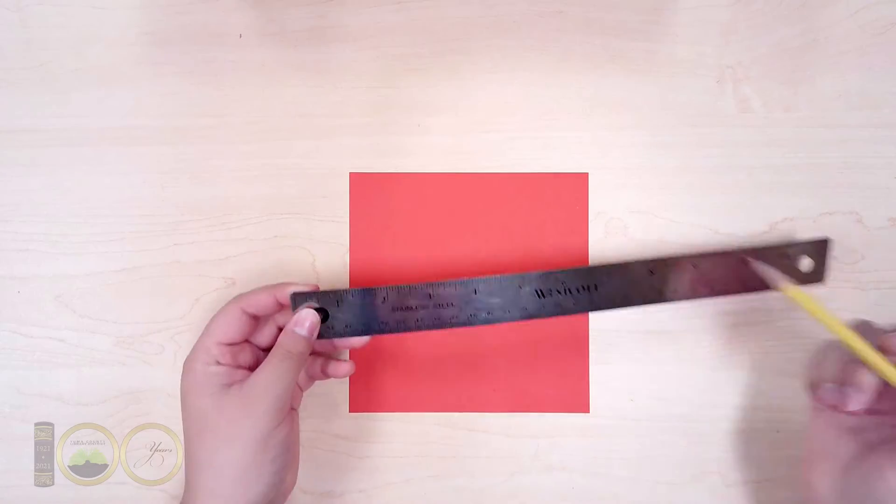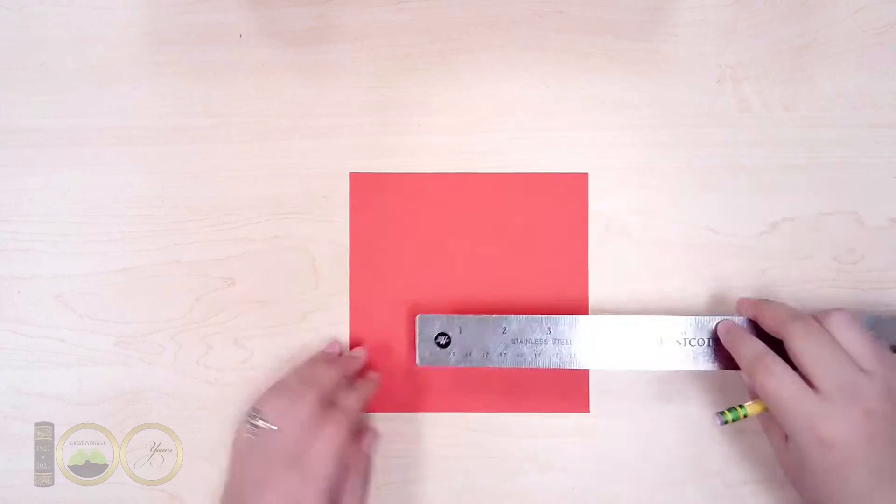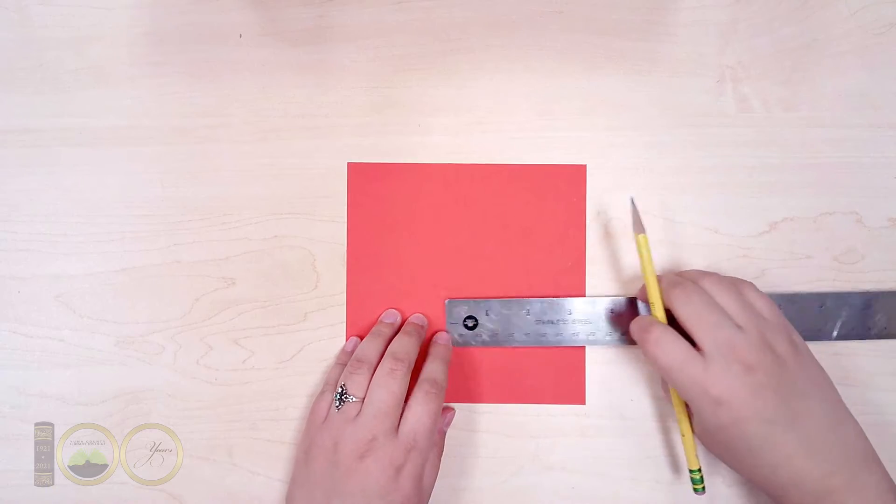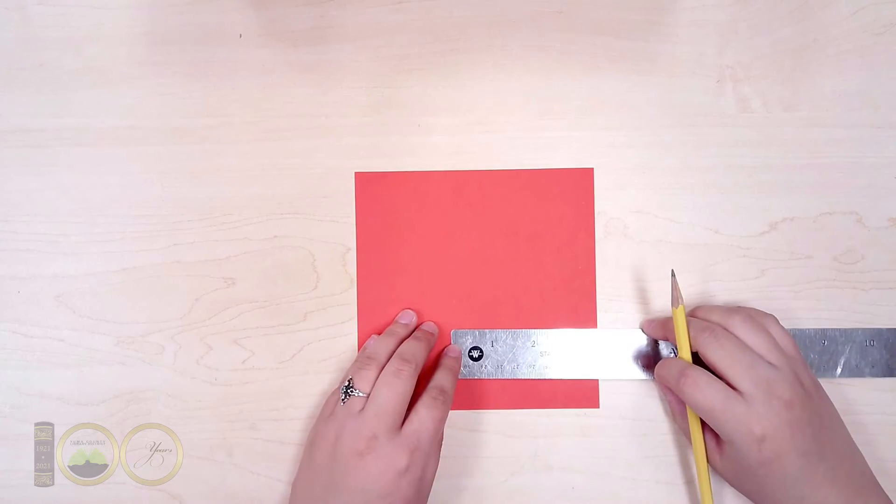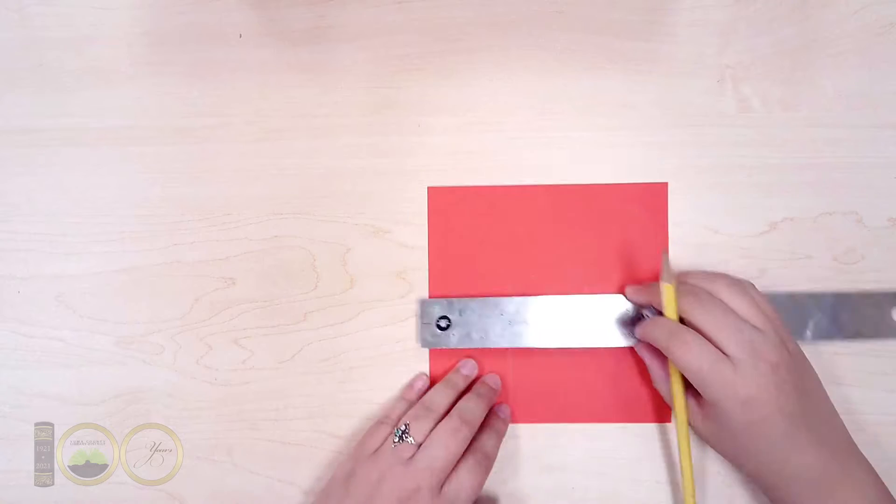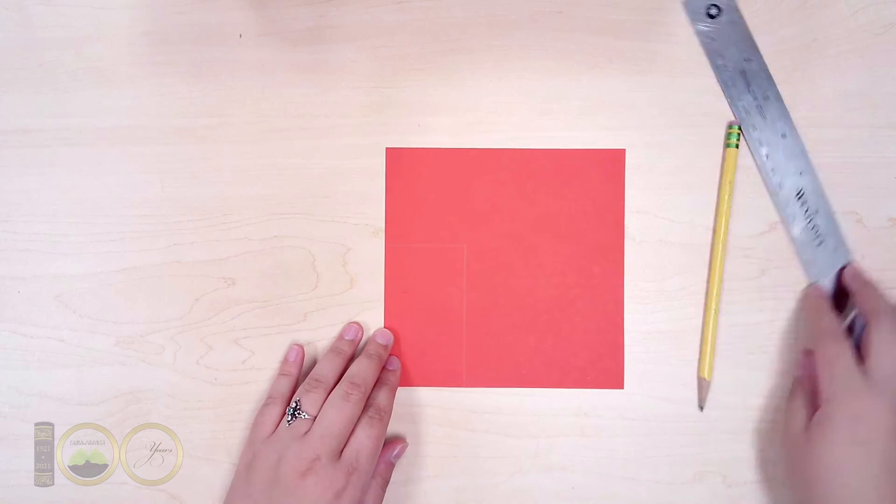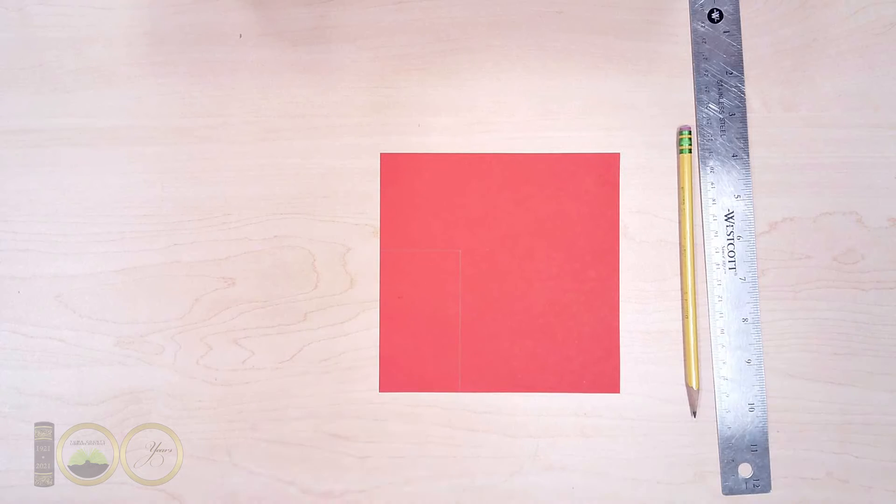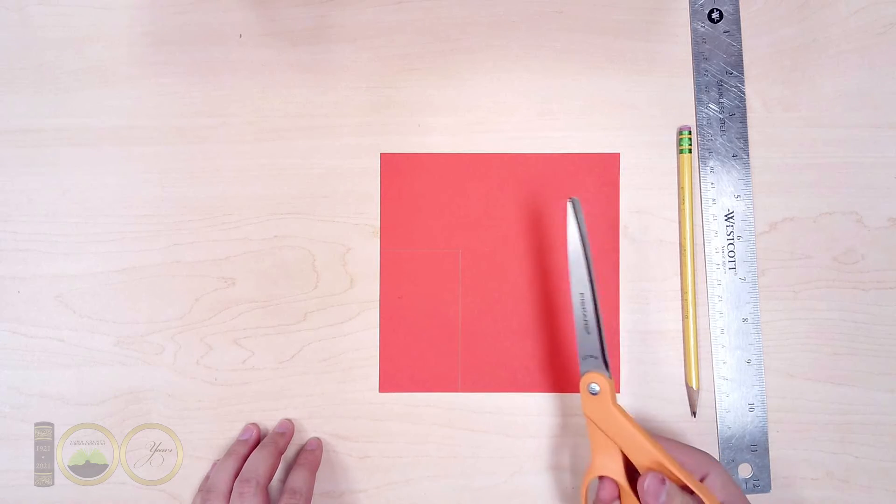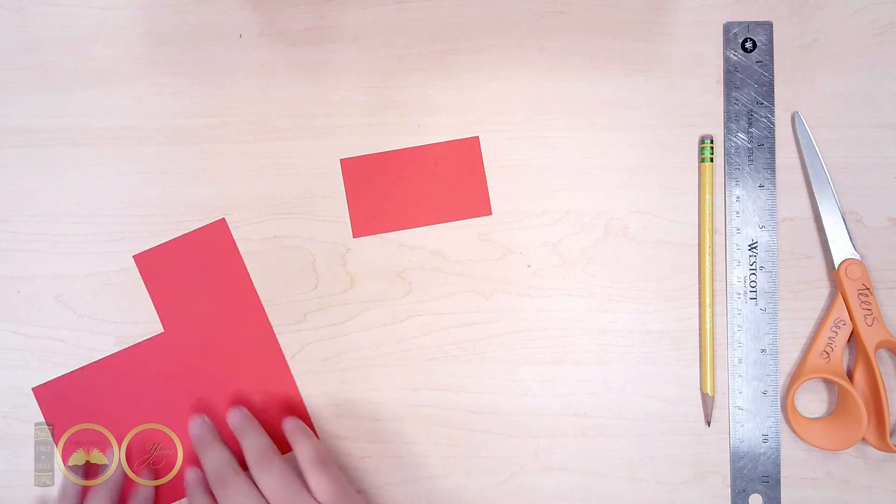First, measure a 3.5 inch by 2 inch rectangle on the red paper with your ruler and pencil. Cut the rectangle out and set aside the remainder of the red paper.